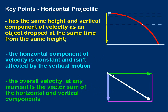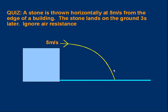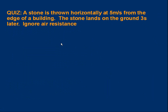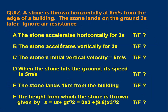Those are very important points. If you don't understand these, you won't be able to understand projectiles. Now let's see what you've picked up — here's a quiz. A stone is thrown horizontally at five meters per second from the edge of a building, and the stone lands on the ground three seconds later. You can ignore air resistance. There's a diagram showing the top of the building and the ground. The initial velocity is five meters per second horizontally. Pause the video, work through the questions, decide if they are true or false, and I'll go through the answers in a moment.